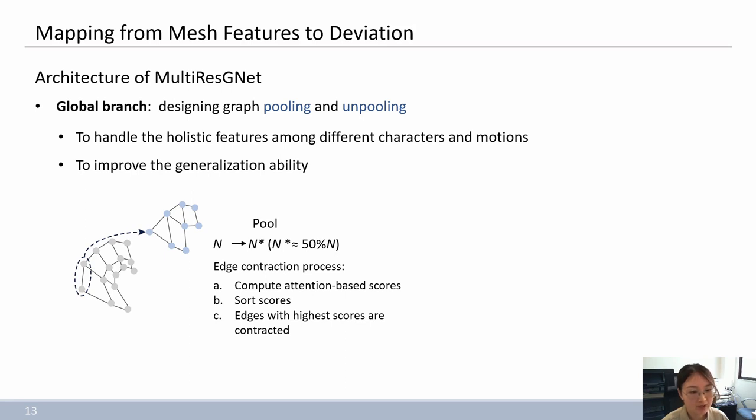For the inverse of pooling, we also perform the corresponding unpooling operation. To restore the graph to its original structure, nodes are given the mapping of location information from the pooling layer. And after this step, the number of nodes will be restored from n star to n.